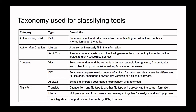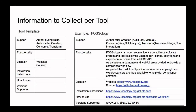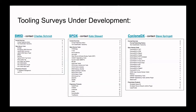Those are the basic taxonomy areas. We've also been looking at the information you need to collect for tools, and we came up with a template that seems to be working well. You want to know what type of functions the tool provides — using the taxonomy we just went through — what the functionality of the tool itself is, where you can find it, how to install it, how to use it, and which specification versions are supported. The group has also been working on tooling surveys for each of the different file formats, with a document for each format listing tools and the taxonomy classifications you've seen.